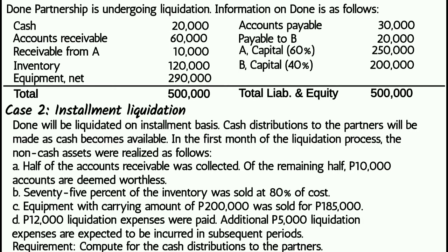Let us now proceed to Case 2: installment liquidation. Don Partnership will be liquidated on an installment basis, with cash distributions made to partners as cash becomes available. In the first month of the liquidation process, the non-cash assets were realized as follows: A — half of the accounts receivable was collected; of the remaining half, 10,000 pesos are deemed worthless; B — 75% of the inventory was sold at 80% of cost; C — equipment with a carrying amount of 200,000 pesos was sold for 185,000 pesos; D — 12,000 pesos in liquidation expenses were paid; and an additional 5,000 pesos in future liquidation expenses are expected. Requirement: compute the cash distributions to the partners.